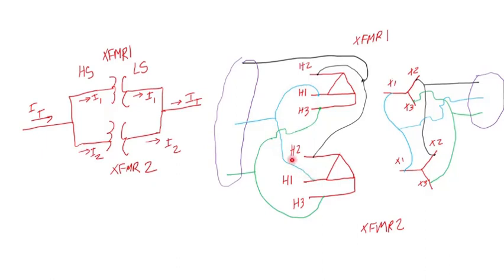So the H1 terminals are connected in blue, so they're tied together. Then X1s are tied together because that way they're in parallel. Then H2s are connected together with a black color, the same thing on the low side. And H3 in green.